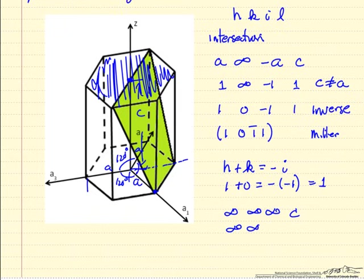So using the same idea, taking inverses, 0, 0, 0, 1 would be the Miller indices for this top plane that I've indicated.